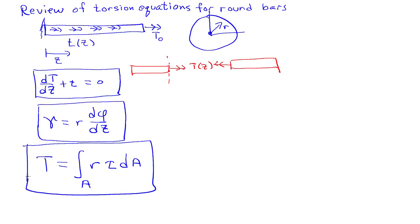And then the special case of elasticity, we have that the shear stress is equal to the shear modulus times the shear strain. So together, these four equations represent the equations that govern the behavior of elastic round bars under the action of torsional loads.